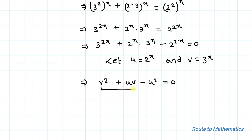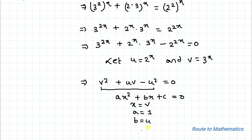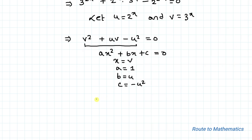Let's consider this as a quadratic equation in v. Our quadratic equation is always in the form ax² + bx + c = 0. In the above equation, let x = v, a = 1, b = u, and c = −u². Now applying the quadratic formula, we can write v equals minus u plus or minus the square root of...